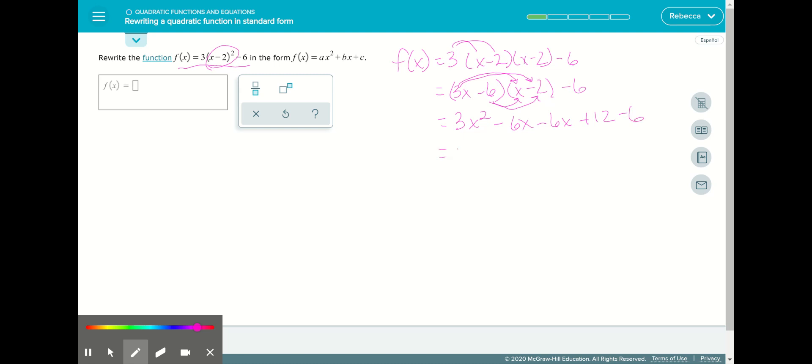And we're going to combine like terms. 3x squared minus 12x. And 12 and negative 6 will give us plus 6. And that is what we will submit.